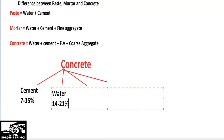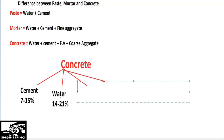However, the water content may change depending on the mix design, but this is the general range. The third component is fine aggregate, and its percentage normally ranges from 24 to 30 percent.